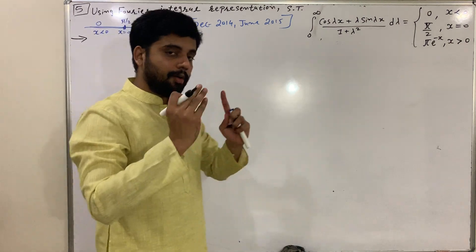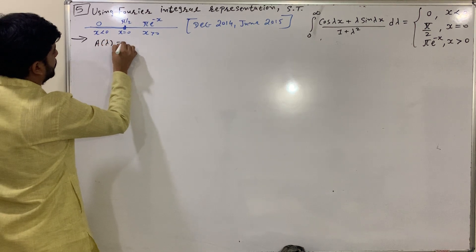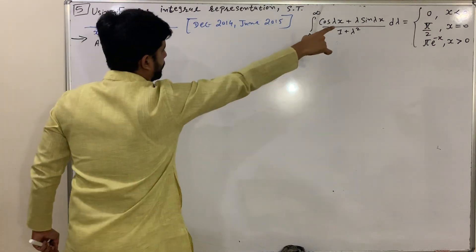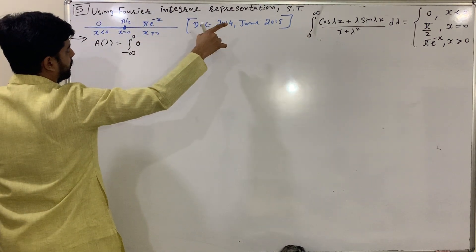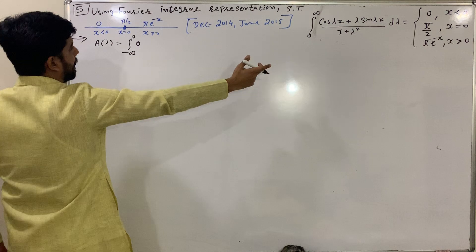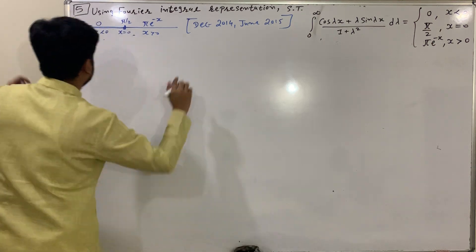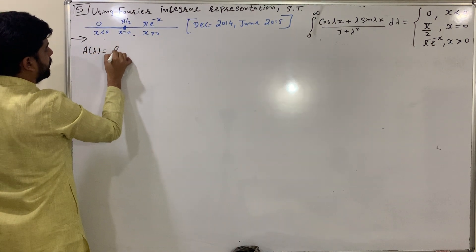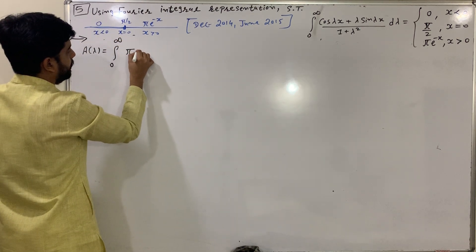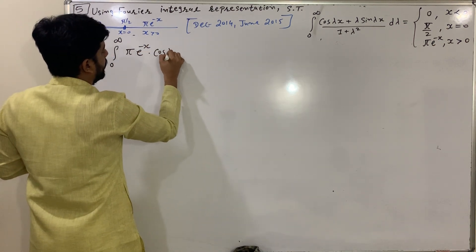The Fourier integral representation is: integral of [a(λ) cos λx + b(λ) sin λx] dλ. To find a(λ), we use the formula: a(λ) = (1/π) integration from minus infinity to infinity of f(x) cos λx dx. Since f(x) = 0 for x < 0, the lower part vanishes, and from 0 to infinity f(x) = π·e^(−x).